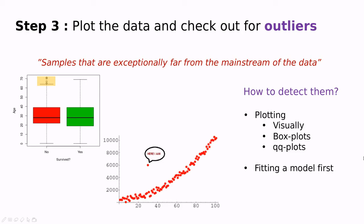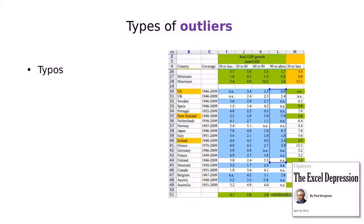The second way to detect outliers should be trying to fit a model. And then according to that model, try to see if some points are outliers. Typically, we can classify outliers in three categories. The first one is the most prosaic one, which is the typo.